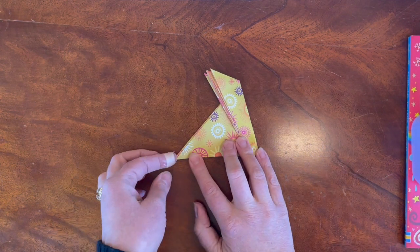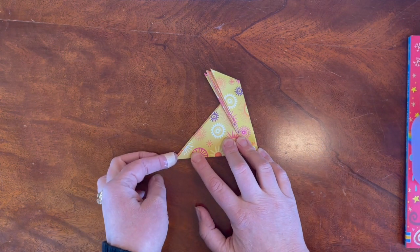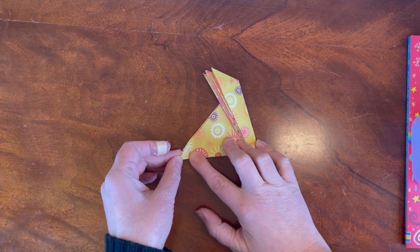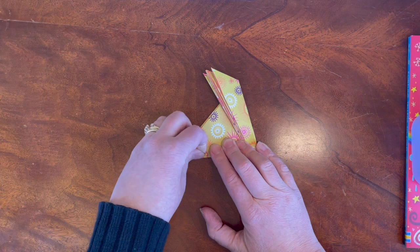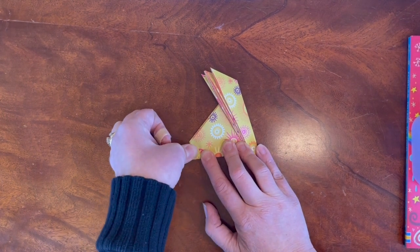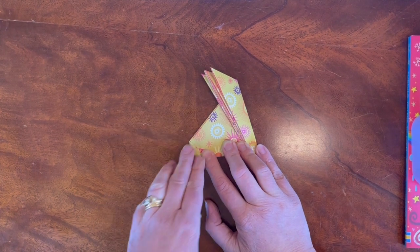Now we're going to fold in this little corner back here. It doesn't matter how much you fold it—this is the fox's little tail. Fold it so that the bottom edges do line up and give that a good crease. This is what's going to give the fox stability.